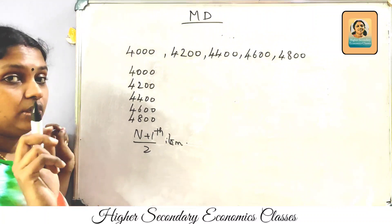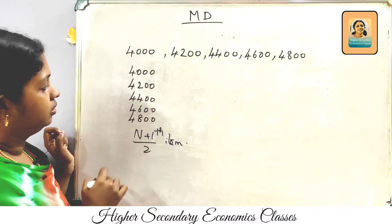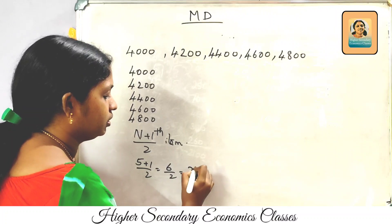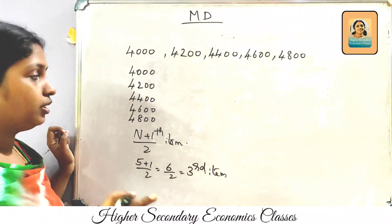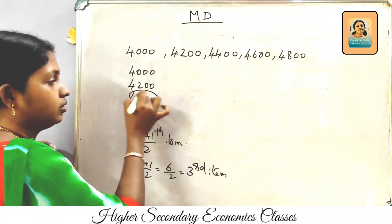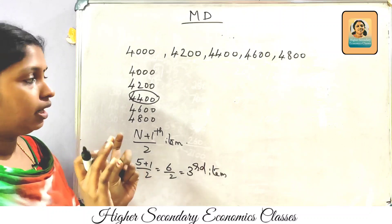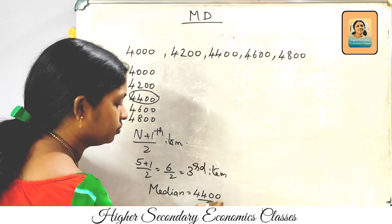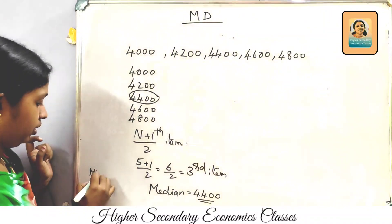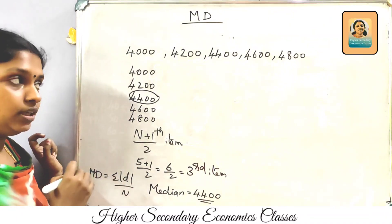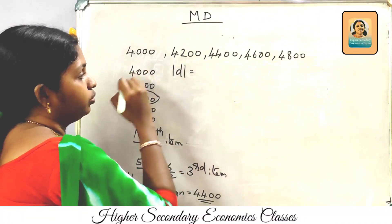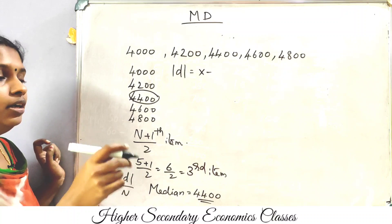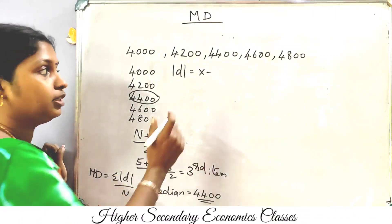In the individual series, how many items do we have? N equals 5. So the median equals the (5 plus 1) divided by 2, which is the 6 by 2, which is the 3rd item. In the corresponding ascending order, the 3rd item is the median value. So median equals 4400. Modulus d equals x minus median.